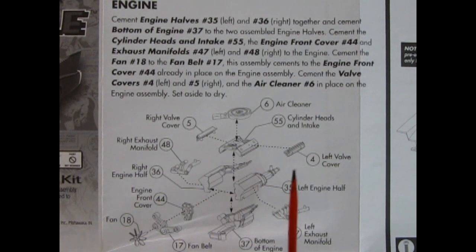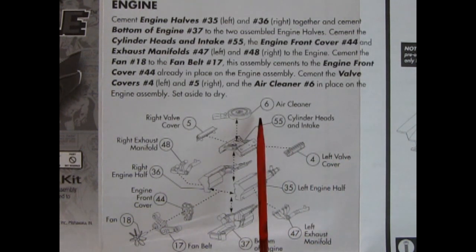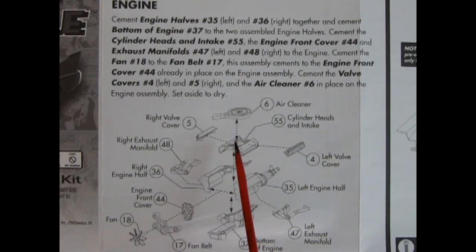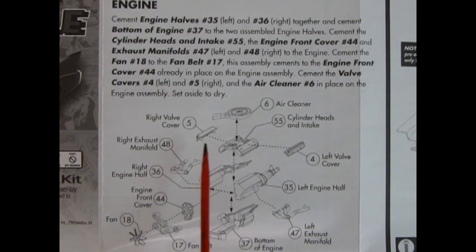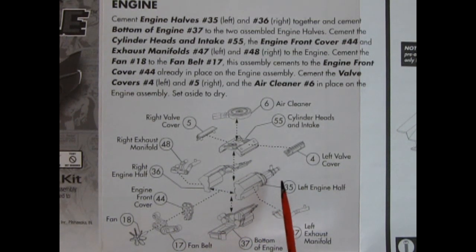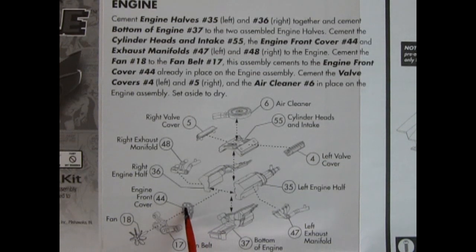Next up, we have the engine. And this really reminds me of one of the Johan promotional models of the past, of the 60s, actually. So we have the air cleaner. We have these cylinder heads and intake manifold molded as one piece. There is no carburetor, so it's just sort of suggested under the air cleaner. The right valve cover, left valve cover, right exhaust manifold, left engine half, right engine half, left exhaust manifold. The bottom of the engine, and it looks like that comes with the transmission. Okay, the transmission is three pieces: molded on the engine block, one, two, and then on the bottom with the oil pan. And then we have the engine front cover, the fan belt, some pulleys, and the fan.